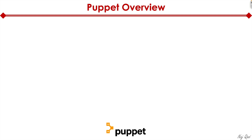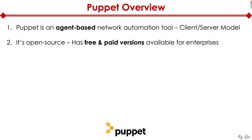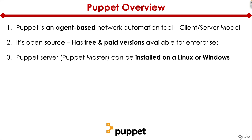Finally, let's look at Puppet — another very popular network automation tool. Very similar to Chef, it's an agent-based tool with a client-server model. It's open source like the rest, and has both free and paid versions available.